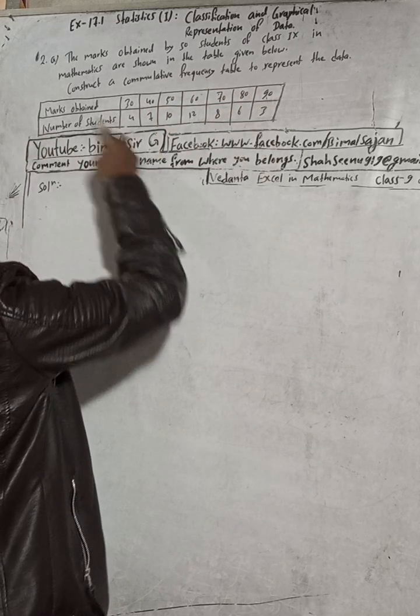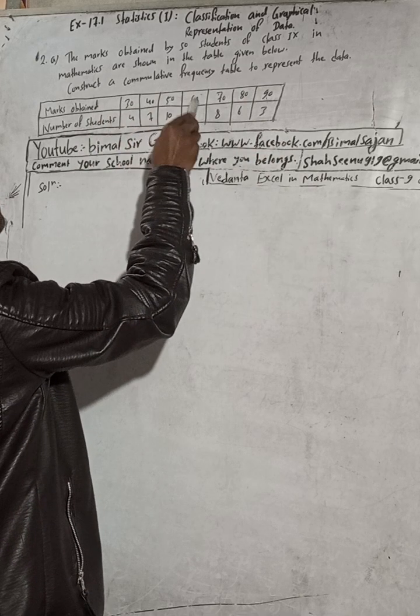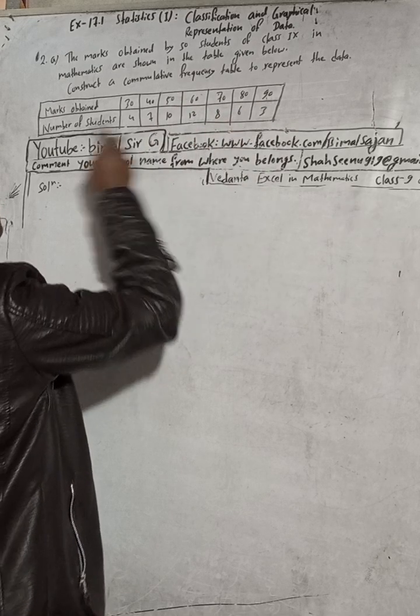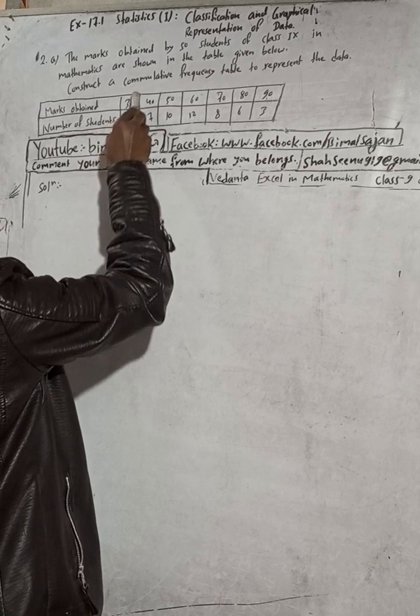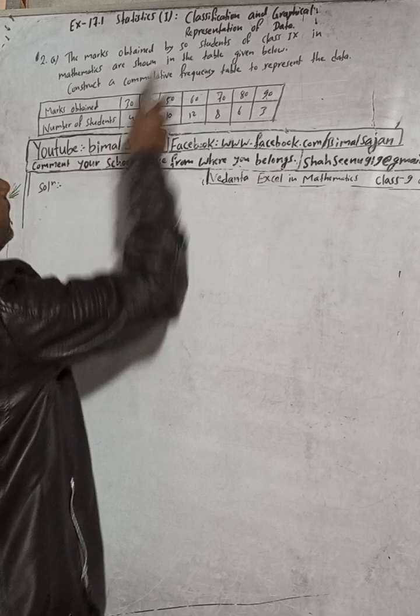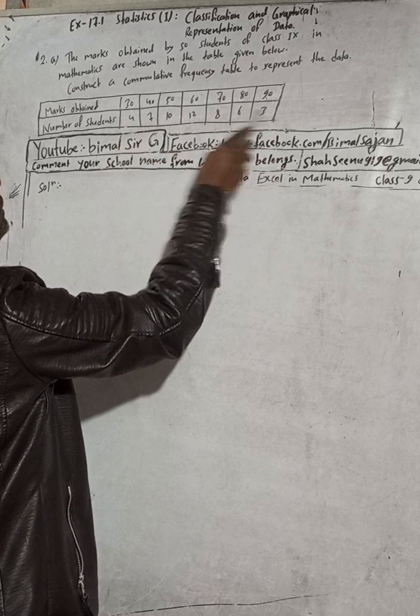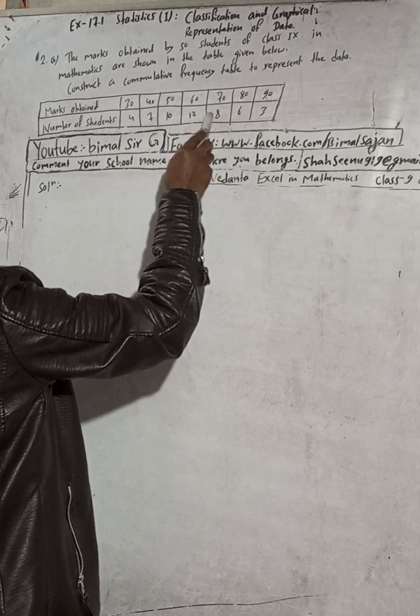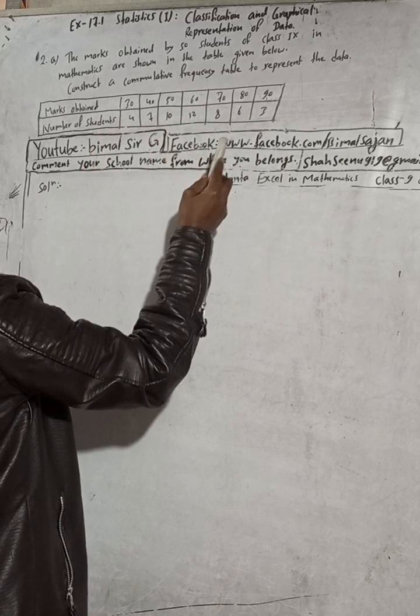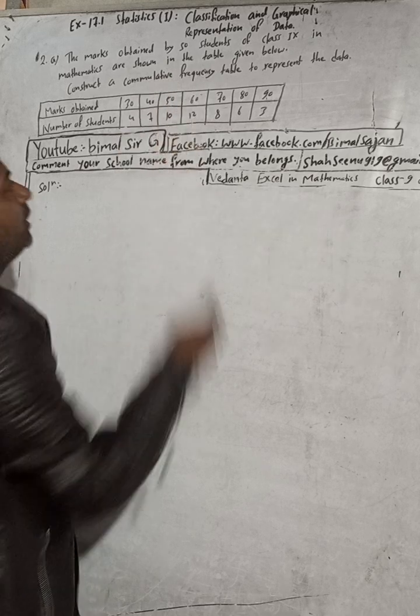In this table you can see marks obtained: 30 marks, 40 marks, 50 marks, 60 marks, 70, 80, 90 marks, and number of students. So 30 marks is obtained by 4 students, 40 marks by 7 and so on. There is given 50, so if we add all this you will get 50. This is the number of students, and now we have to construct a cumulative frequency table.